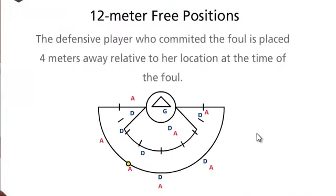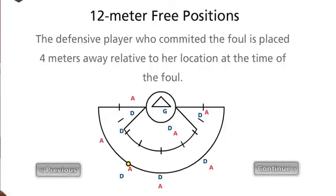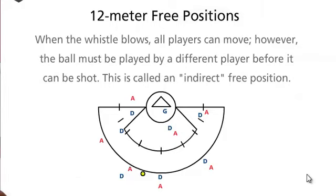The defensive player who committed the foul is placed 4 meters away relative to her location at the time of the foul. When the whistle blows, all players can move; however, the ball cannot be shot directly by the player in possession of the ball.